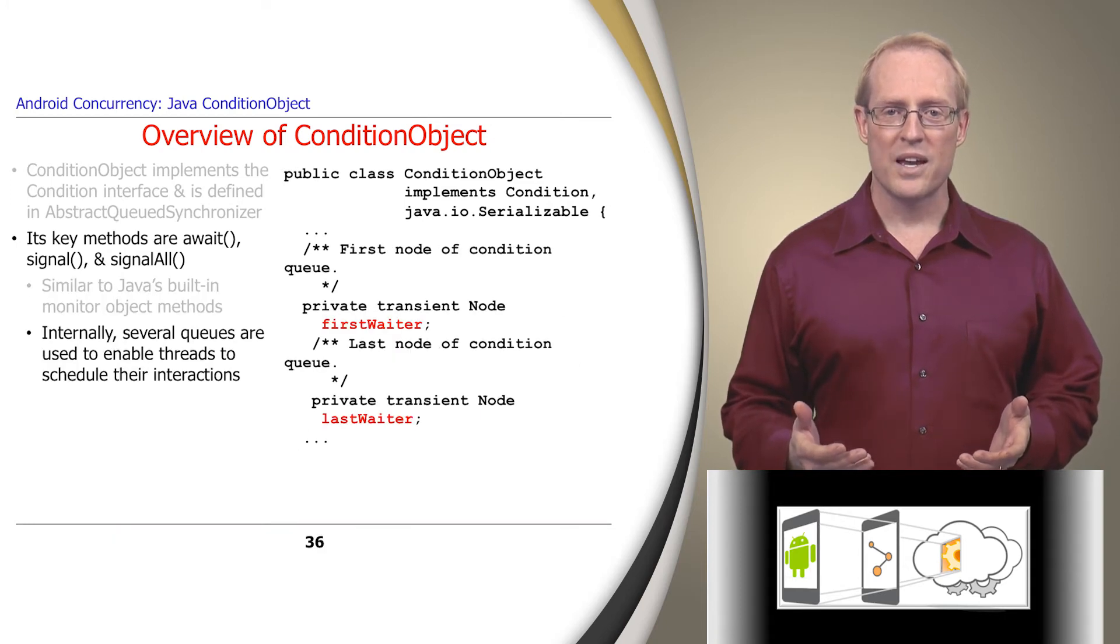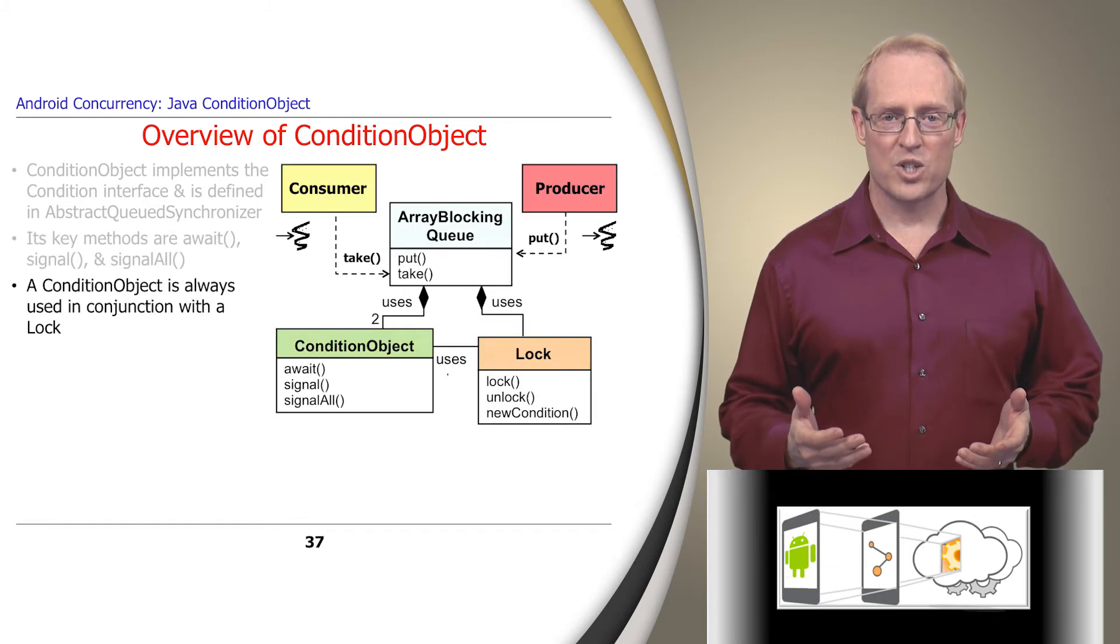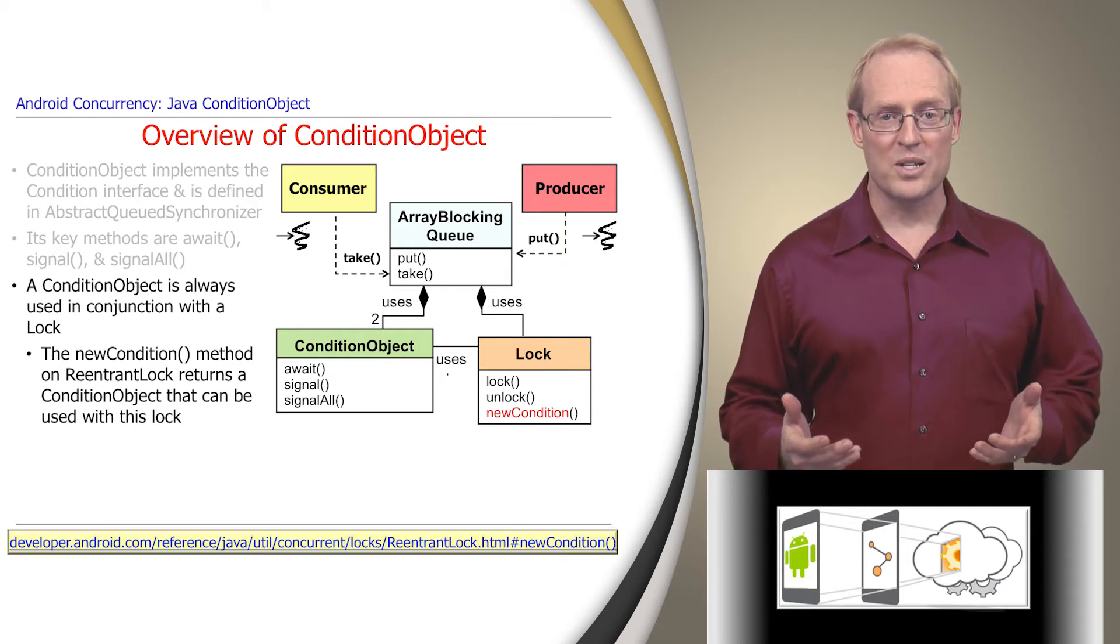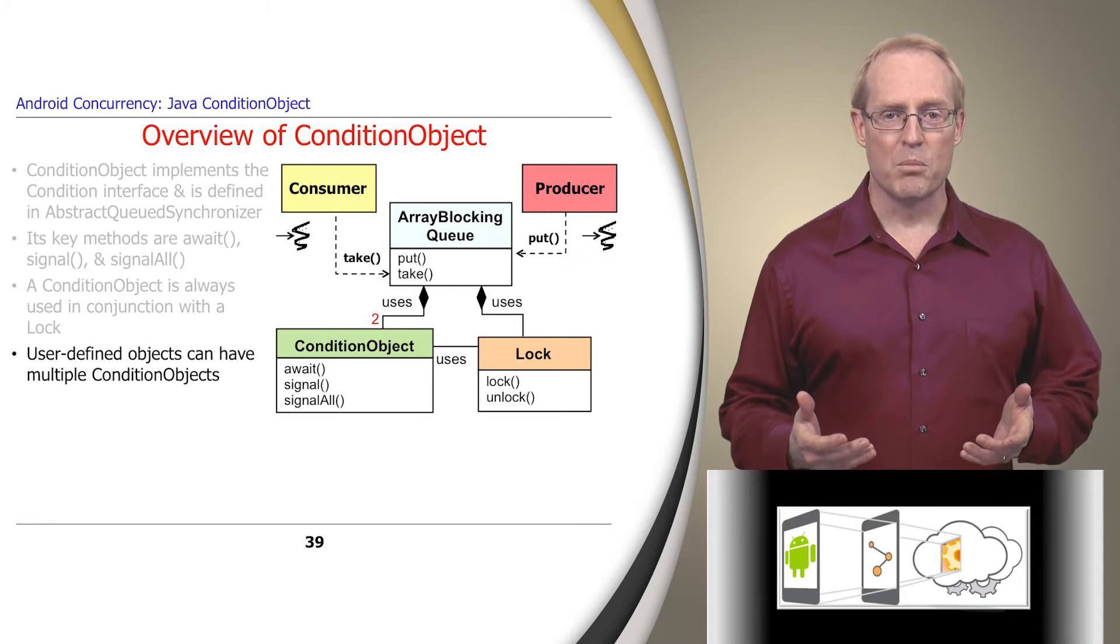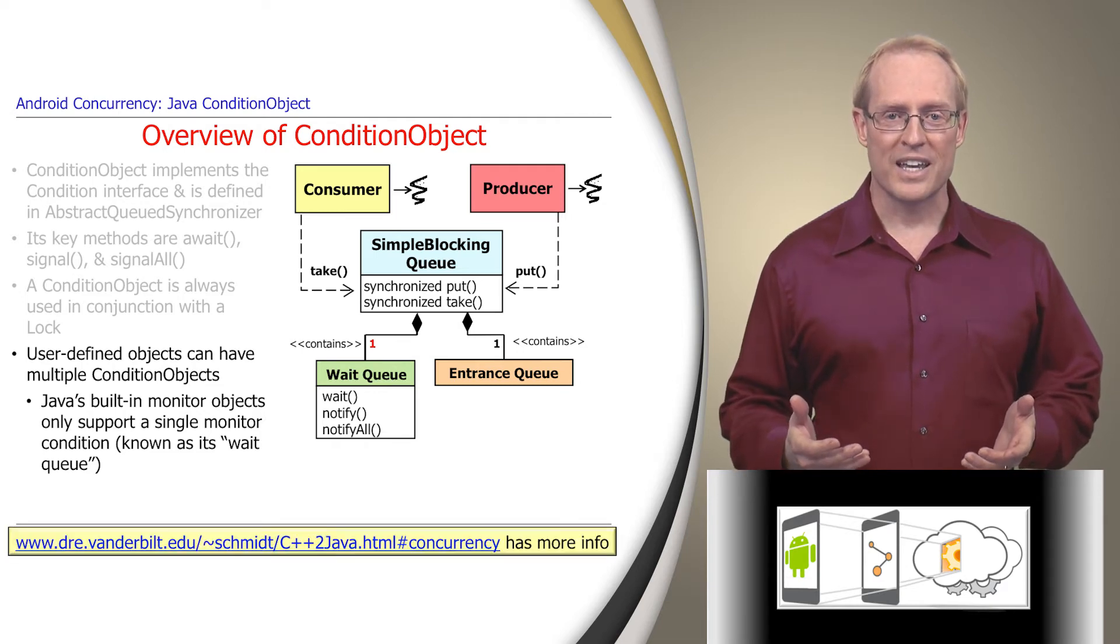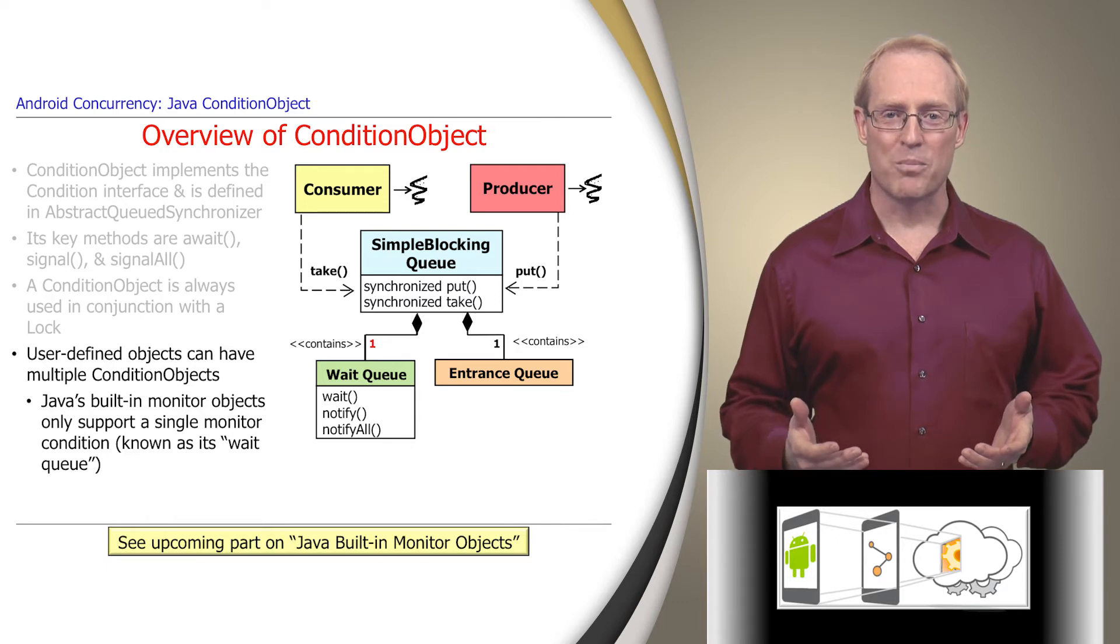Internally, a condition object uses various queues that enable threads to coordinate their interactions by waiting and signaling each other when changes occur to state shared by the threads. To ensure this shared state is protected from race conditions, a condition object is always used with a lock, such as the Java reentrant lock discussed in an earlier video. In fact, reentrant locks have a new condition method that returns a condition object instance that can be used with a reentrant lock. User-defined Java objects can have multiple condition objects per object. In contrast, Java's built-in monitor objects only allow a single monitor condition per object, which is more restrictive and can lead to problems like nested monitor lockout.